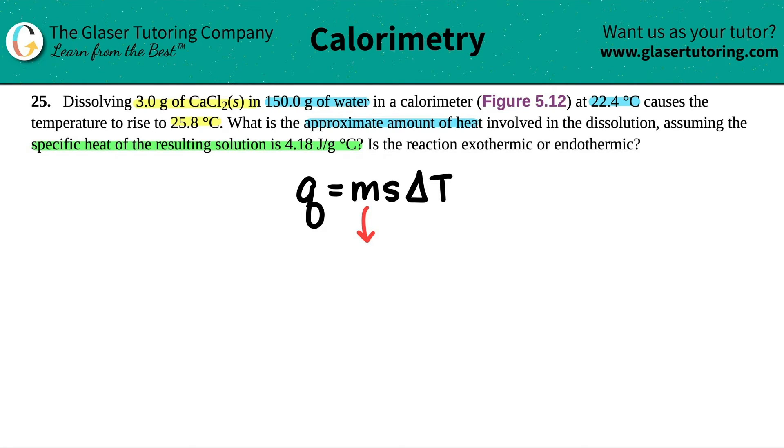The mass is the total mass of the whole entire solution. The whole entire solution was when we added 3.0 grams of the calcium chloride to the 150 grams of the water. So the mass is going to be 3.0 grams of the CaCl2 plus the 150 grams of the water. That's 153.0 grams total. Now they told us that the specific heat of the resulting solution is 4.18 joules per gram degree Celsius.